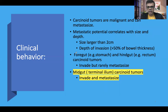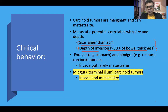Carcinoid tumors can be malignant and metastasize. Metastatic potential varies with size and depth of invasion. Size larger than 2 cm and depth of invasion more than 50% of bowel wall thickness are ominous prognostic markers conferring high metastatic potential. Foregut and hindgut carcinoids may invade adjacent structures but rarely metastasize, whereas midgut carcinoid tumors are most likely to invade and have the highest metastatic potential.